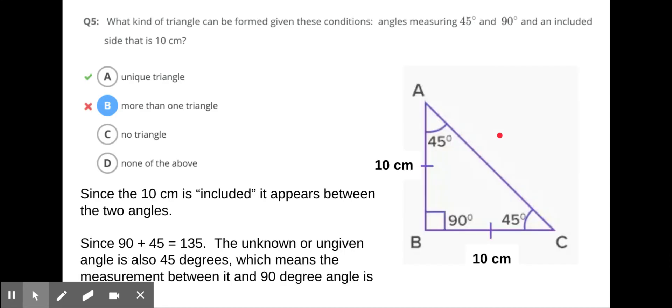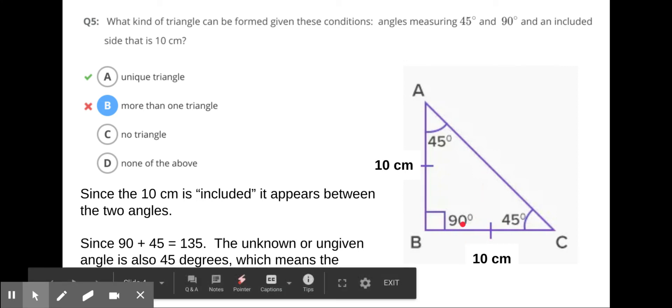Let's look at this one. What kind of triangle can be formed given these conditions: angles measuring 45 degrees, 90 degrees, and an included side that is 10 centimeters? You're only going to be able to form one unique triangle. A is your answer. Included means it appears between the two angles.